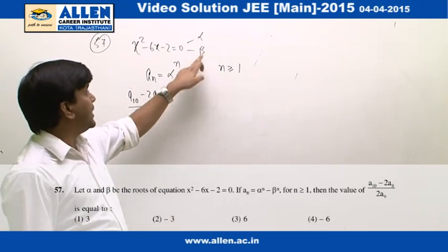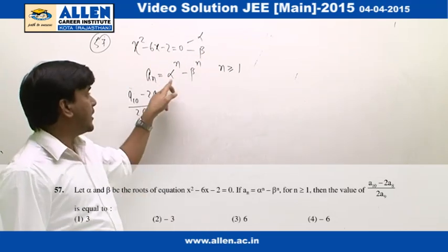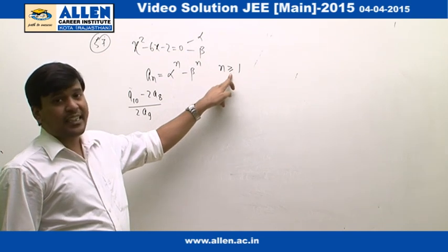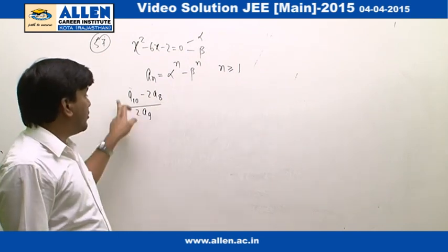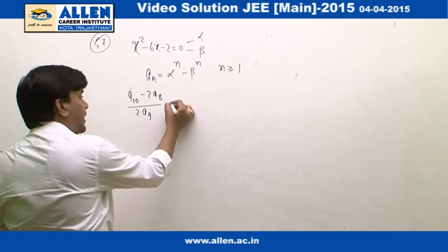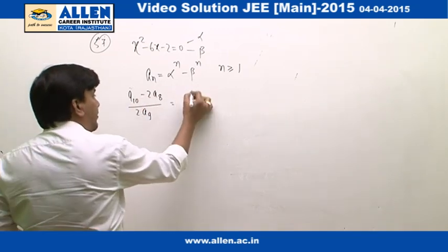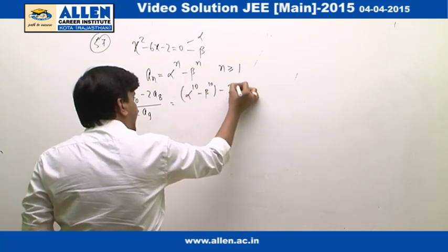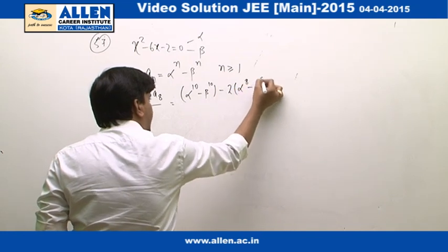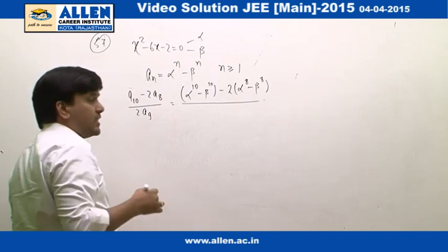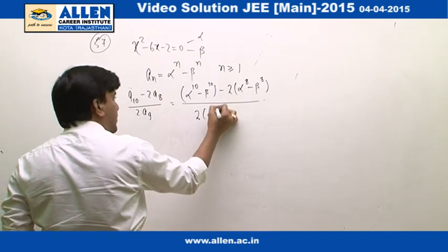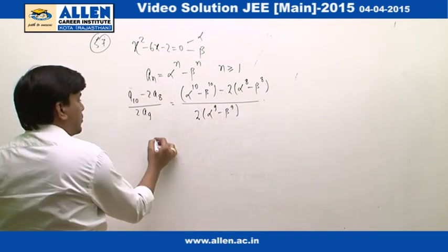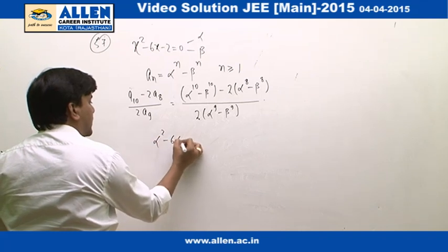In question number 57, alpha and beta are given to be the roots of this equation, and a_n is an expression given by alpha raise to power n minus beta raise to power n, where n is greater than or equal to 1. We have to find the value of a_10 minus 2 times a_8 upon 2 times a_9. Since alpha is the root of this equation, we can write alpha square minus 6 alpha minus 2 equals 0. If we multiply this expression by alpha raise to power 8, this will give us alpha to the power 10 minus 2 alpha raise to power 8 equals 6 alpha to the power 9.